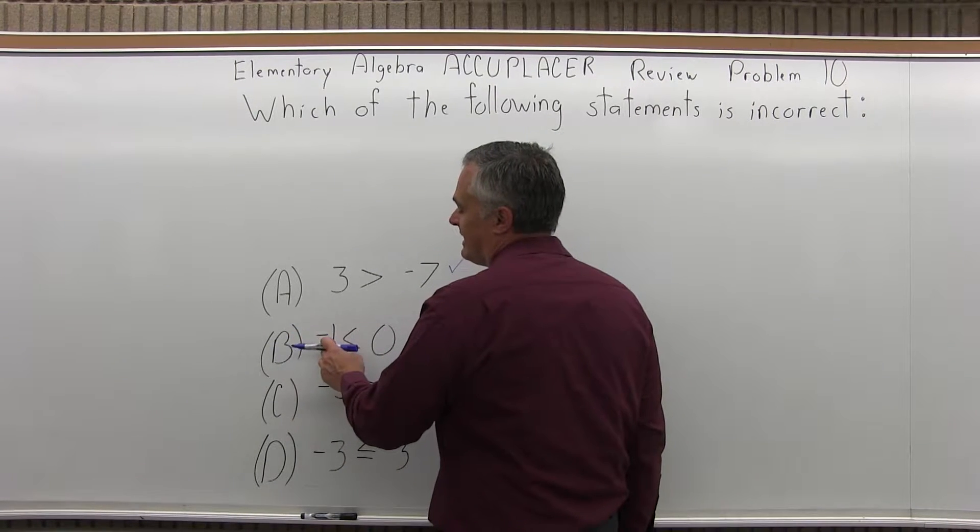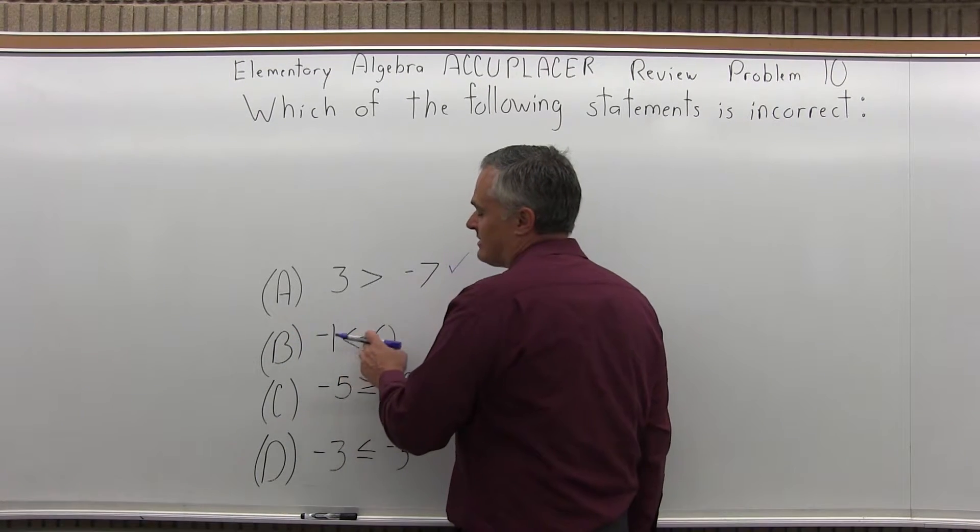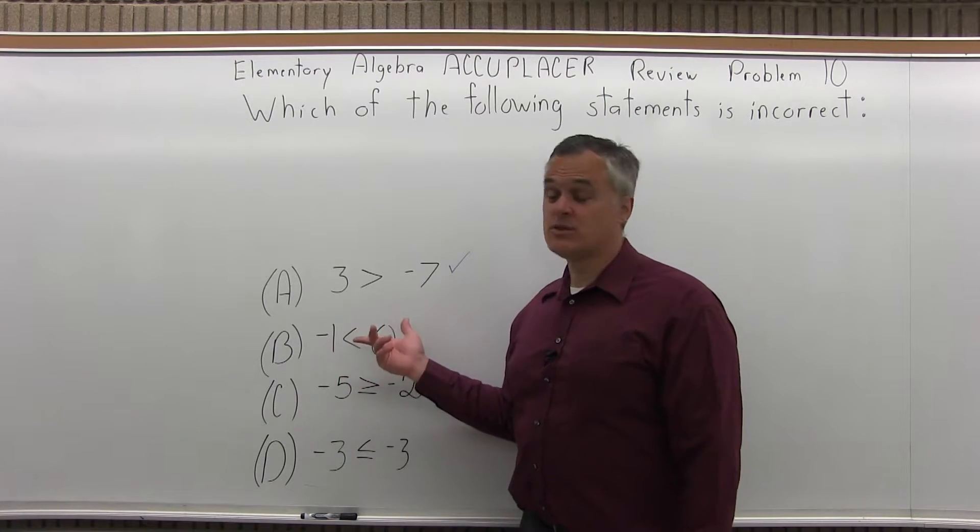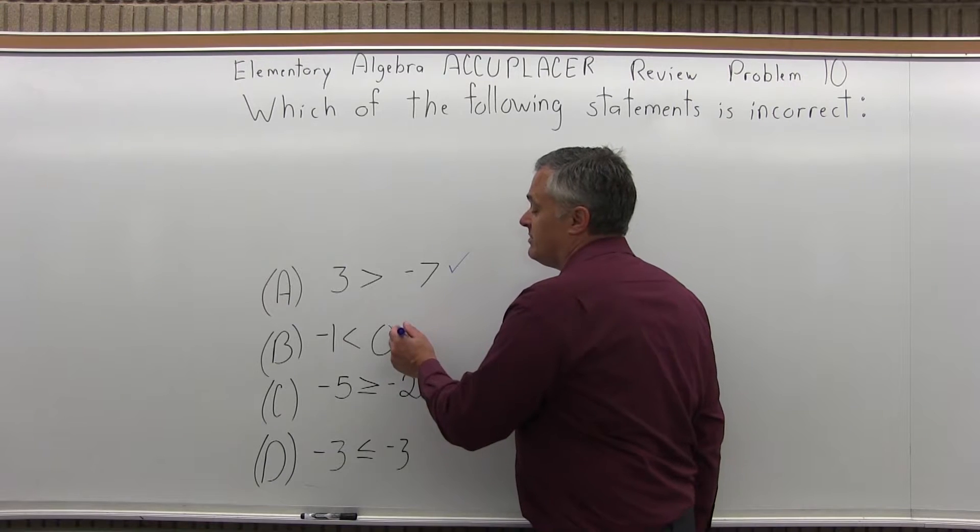Option B, negative one is less than zero. Well, a negative value is less than zero, smaller than zero. So option B is correct.